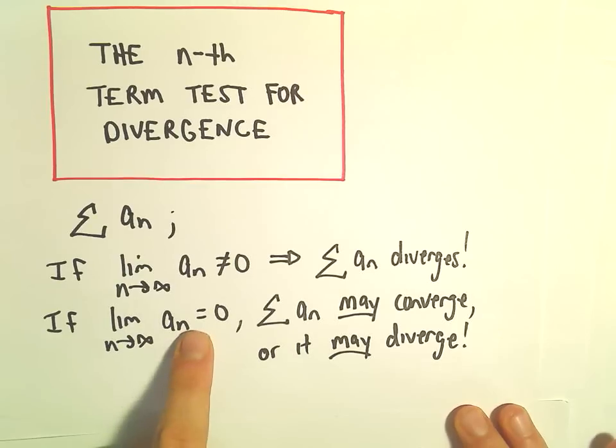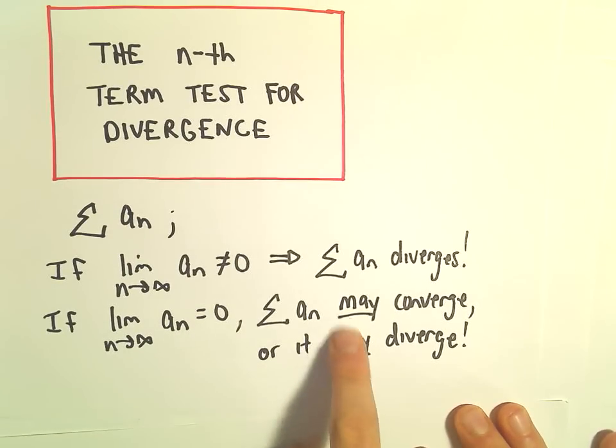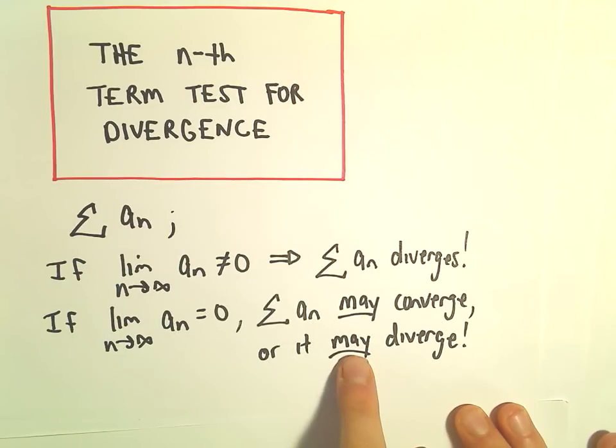If the limit does equal zero, it's inconclusive. The series may converge, it may diverge. We don't know anything.